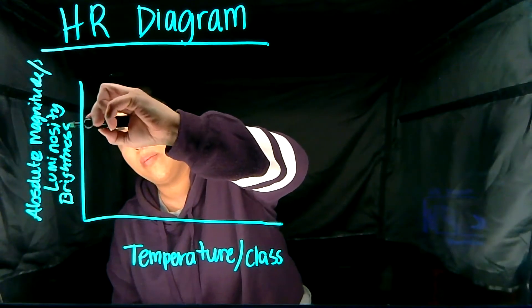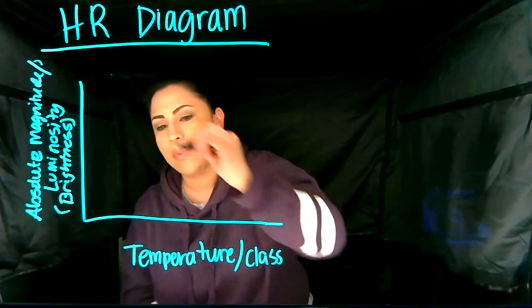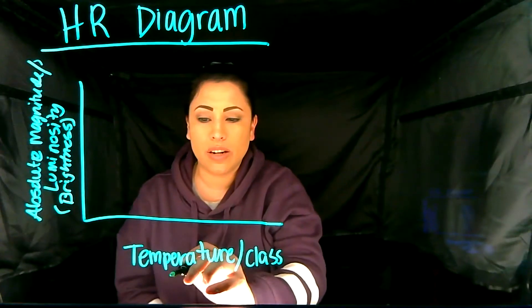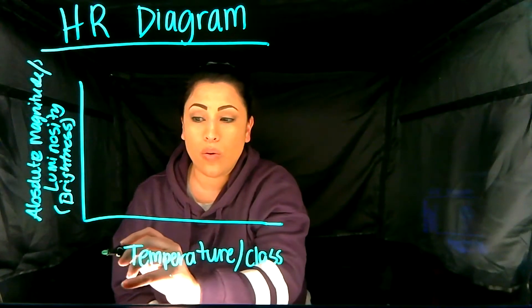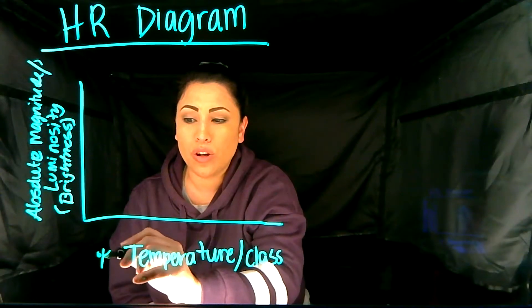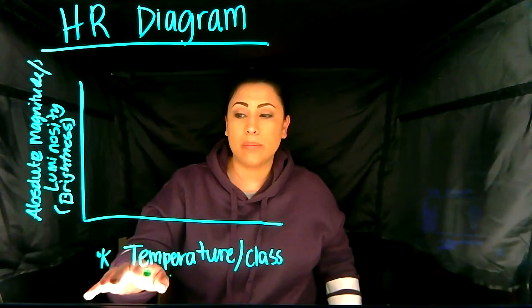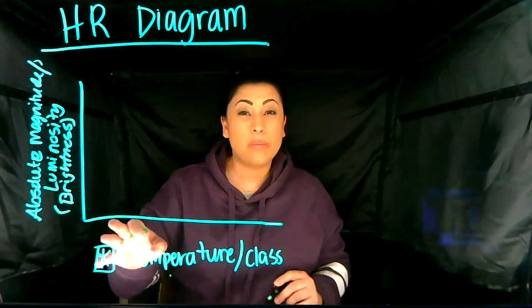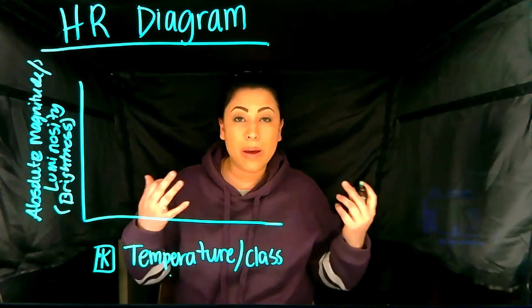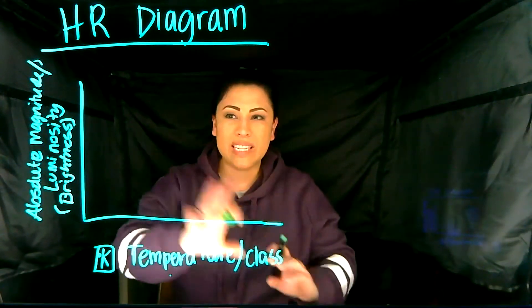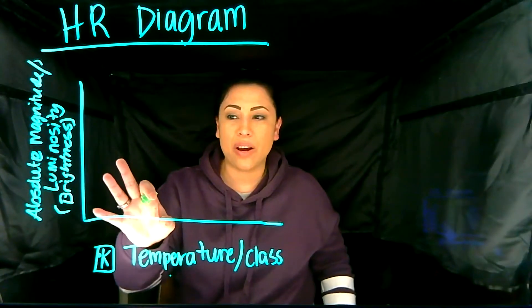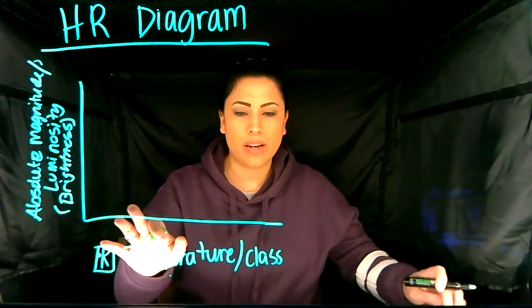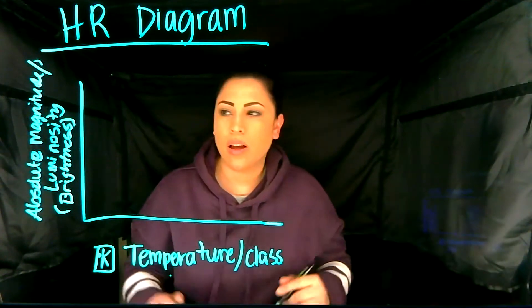In science we usually measure temperature in degrees Celsius, but when we're talking about stars, temperature is going to be in Kelvin — that's a K. These numbers are really, really big because we're talking about stars. Think about our Sun and how hot it is. We'll see where our Sun lies on this diagram, but there are stars that are much hotter than that.